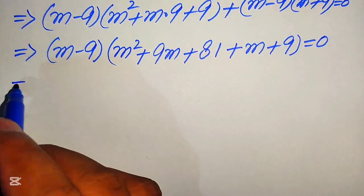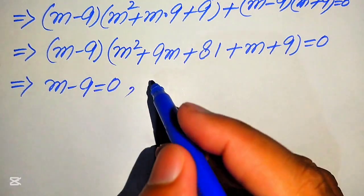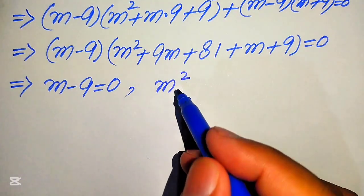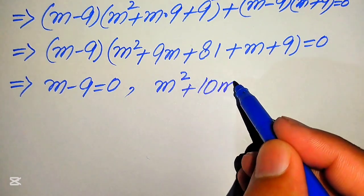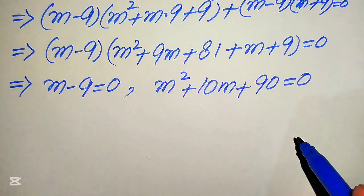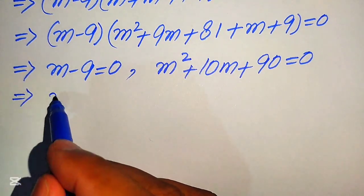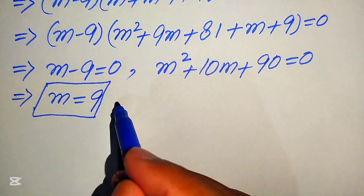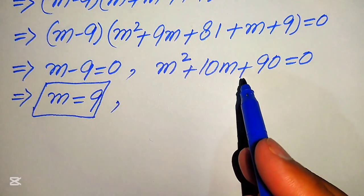We divide this into two cases. The first case is m minus 9 equals 0. For the second case, we simplify the remaining factor by combining like terms: 9m plus m equals 10m, and 81 plus 9 equals 90, giving m squared plus 10m plus 90 equals 0. From the first case we easily get m equals 9, which is our first real solution. To find the other solutions we need to solve this quadratic equation.